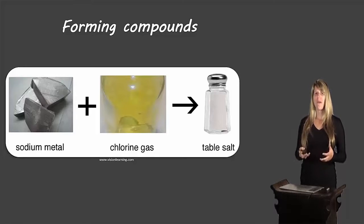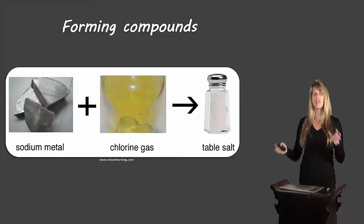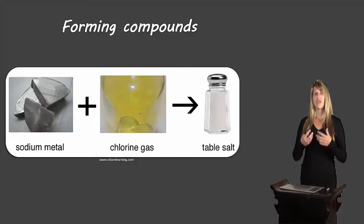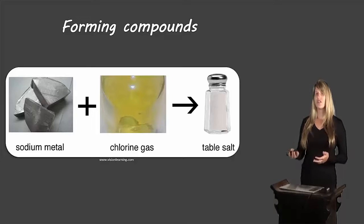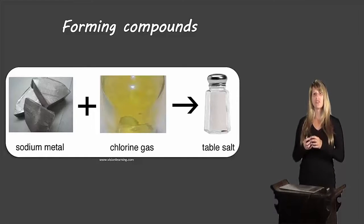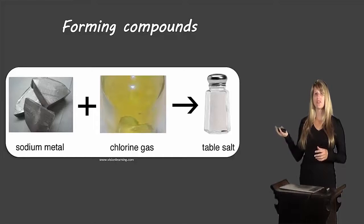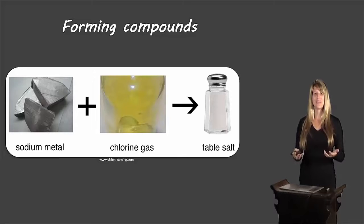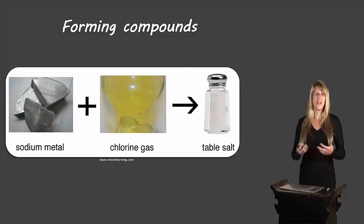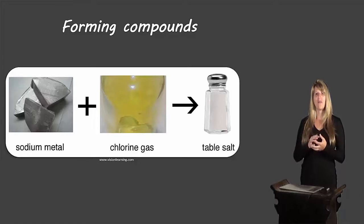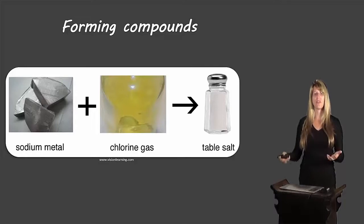I put this picture here just to remind us that when we take different elements and put them together to make a compound, we actually end up with something with very different characteristics than the original elements. Sodium metal is a highly reactive metal, chlorine gas is toxic, but when we put those two together we end up with table salt that we eat on a regular basis. If we tried to eat sodium or chlorine we would end up sick or maybe worse, but we do need to eat table salt as part of our diet.